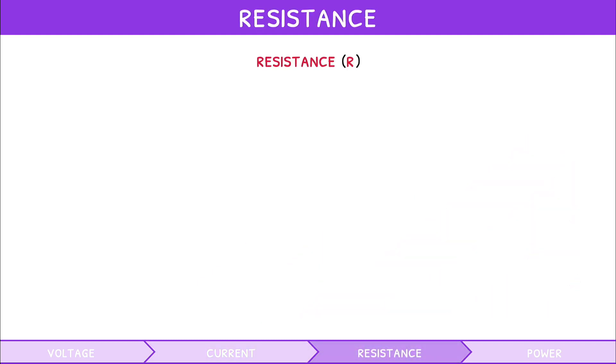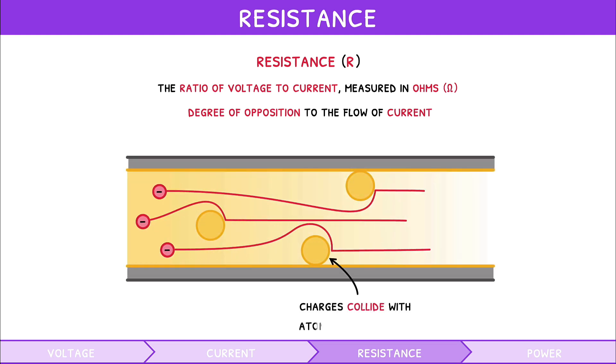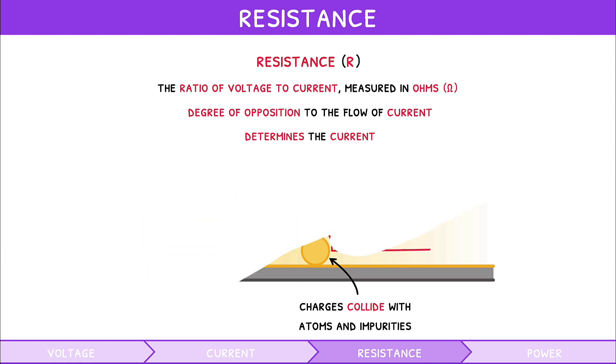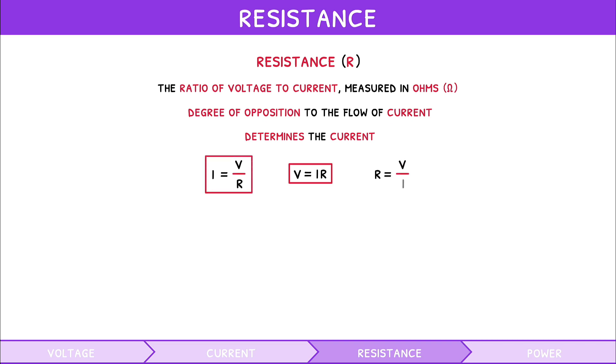Resistance R is officially defined as the ratio of voltage to current, and is measured in ohms. However, this is hard to comprehend. Conceptually, it is the degree of opposition to the flow of current when a material has a potential difference across it. This is because flowing charges collide with atoms and impurities, slowing down their flow. Remember that voltage is the driving force behind current, thus a material's resistance determines the value of the current. The formula for this relationship is given by voltage equals current times resistance. This can understandably be rearranged for both current and resistance. So, current is voltage divided by resistance, and resistance is voltage divided by current. Notice how this formula matches the definition of resistance.